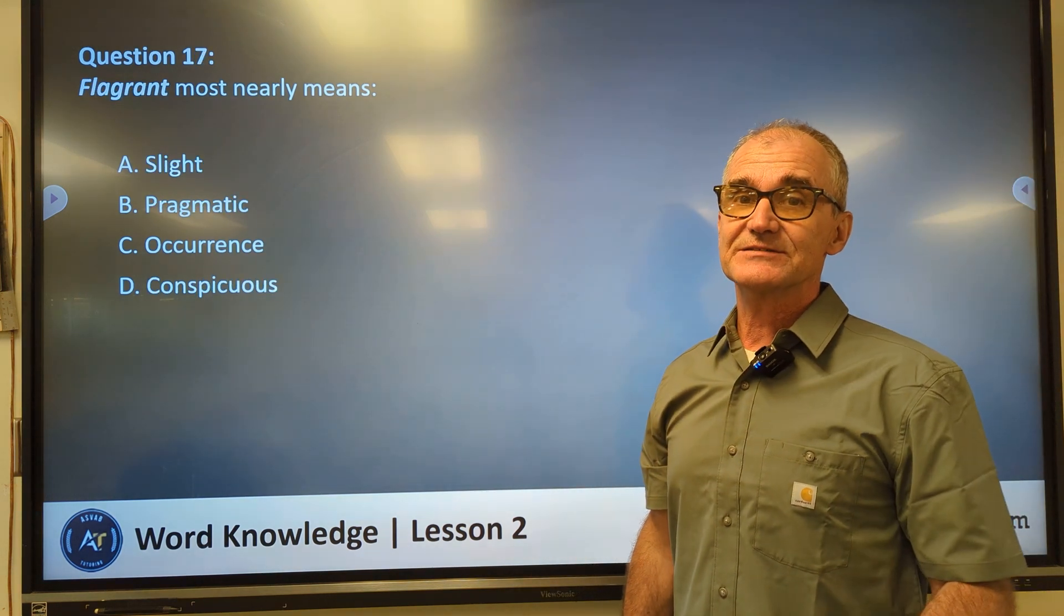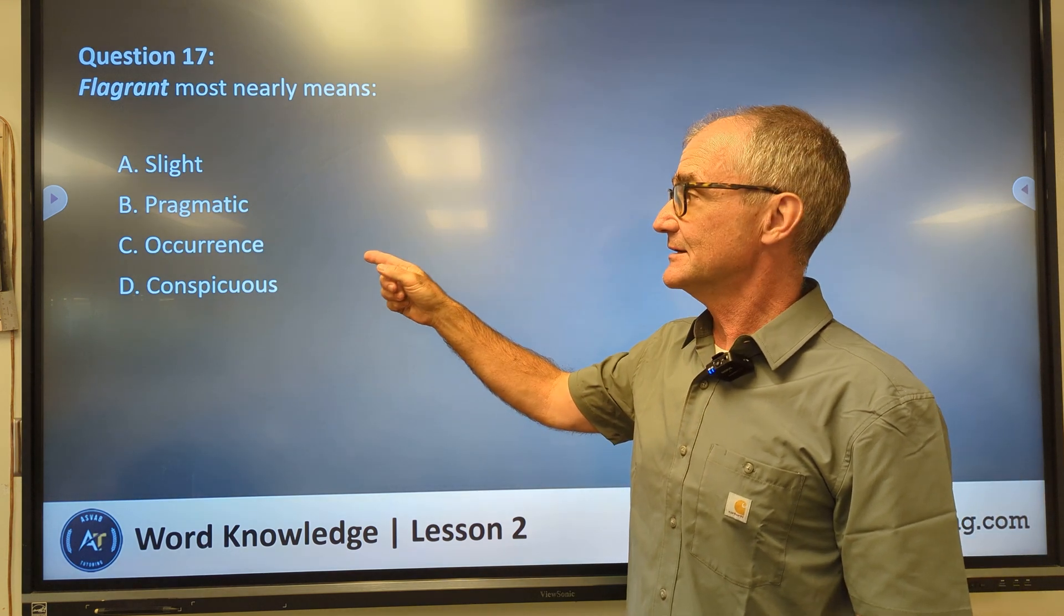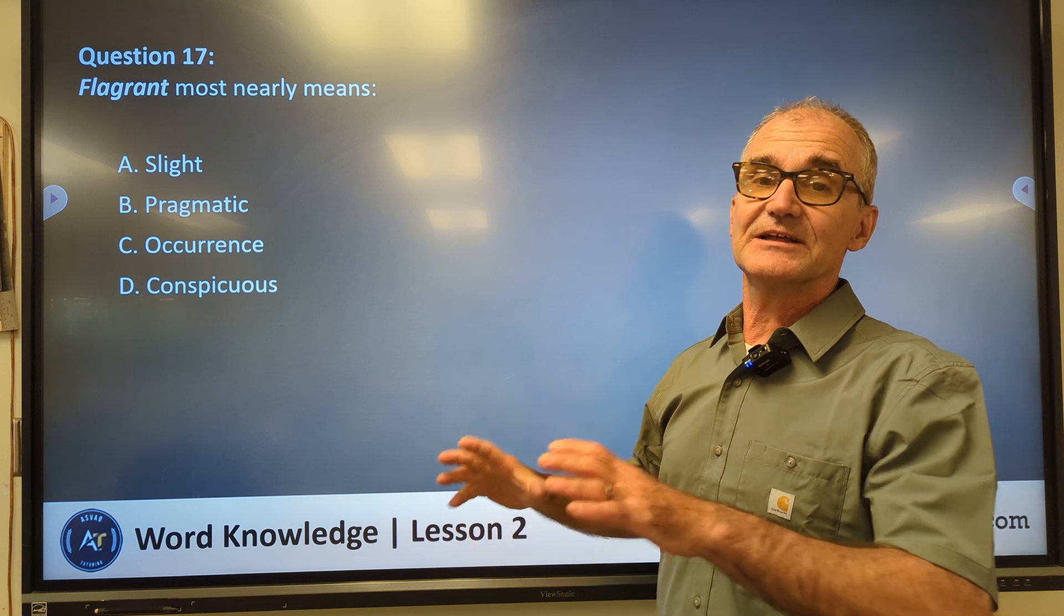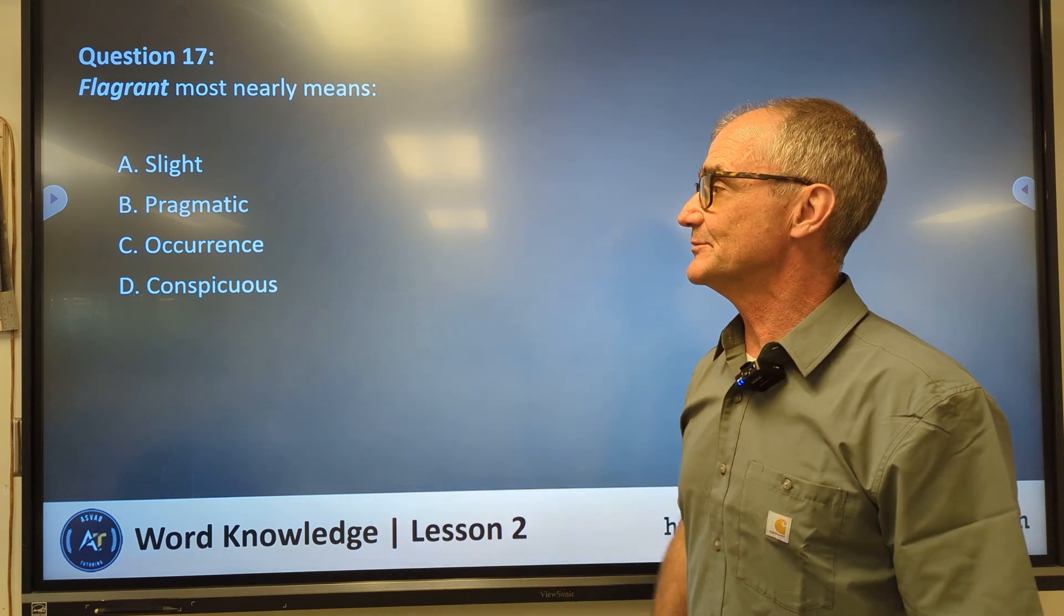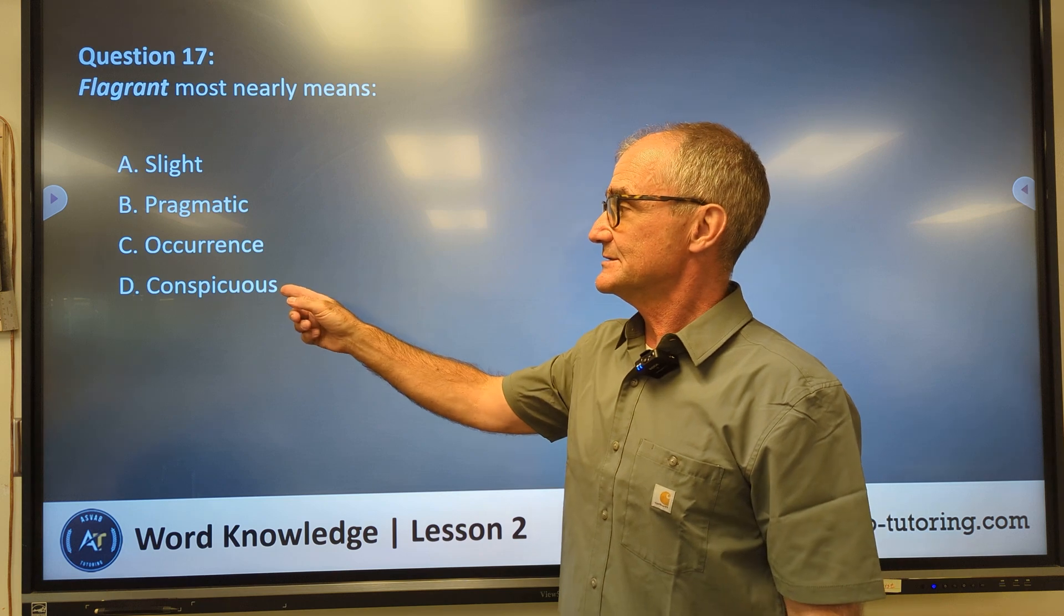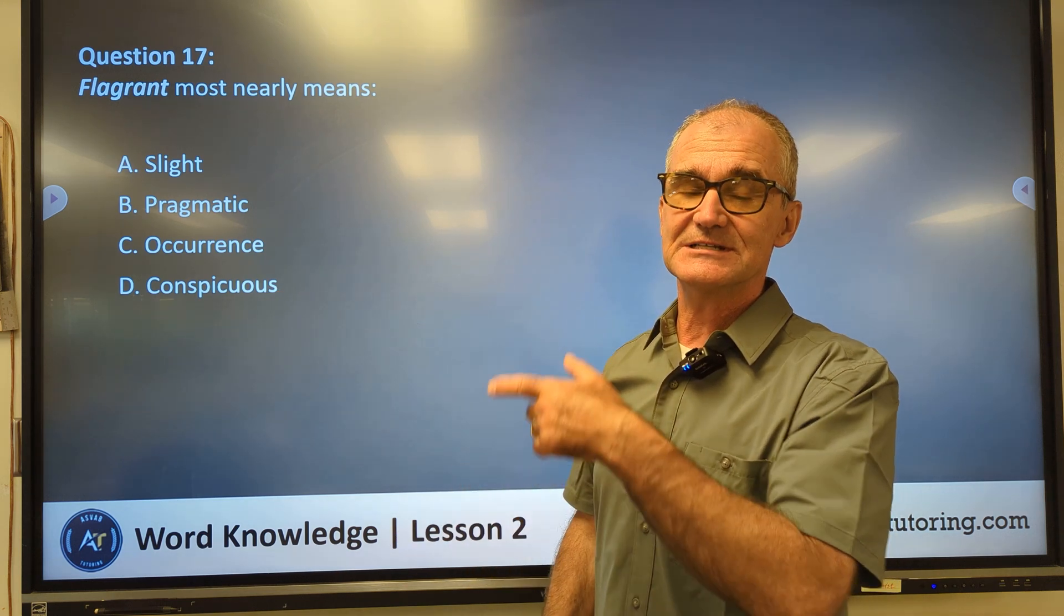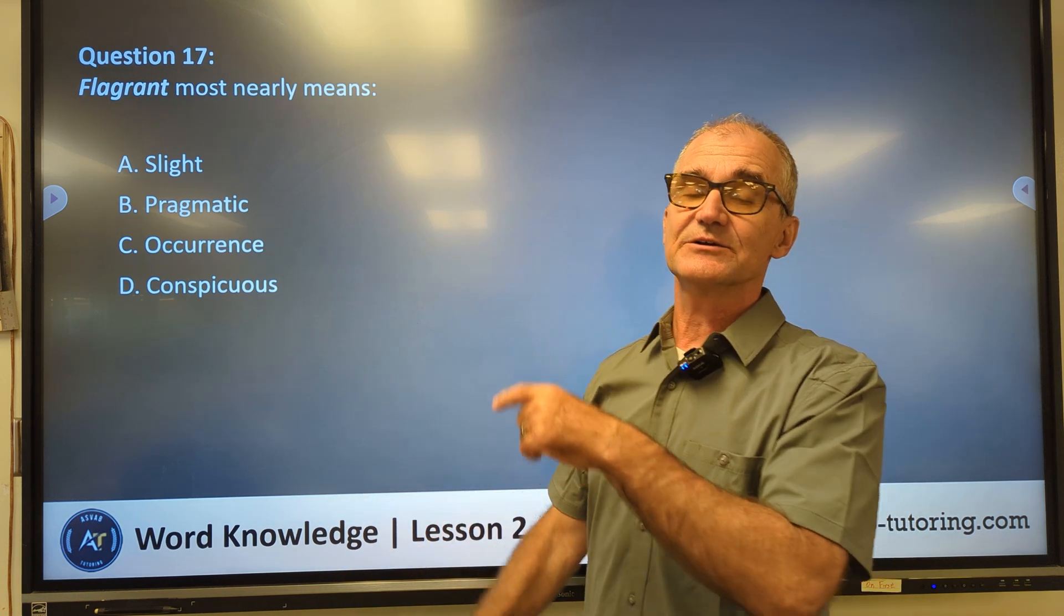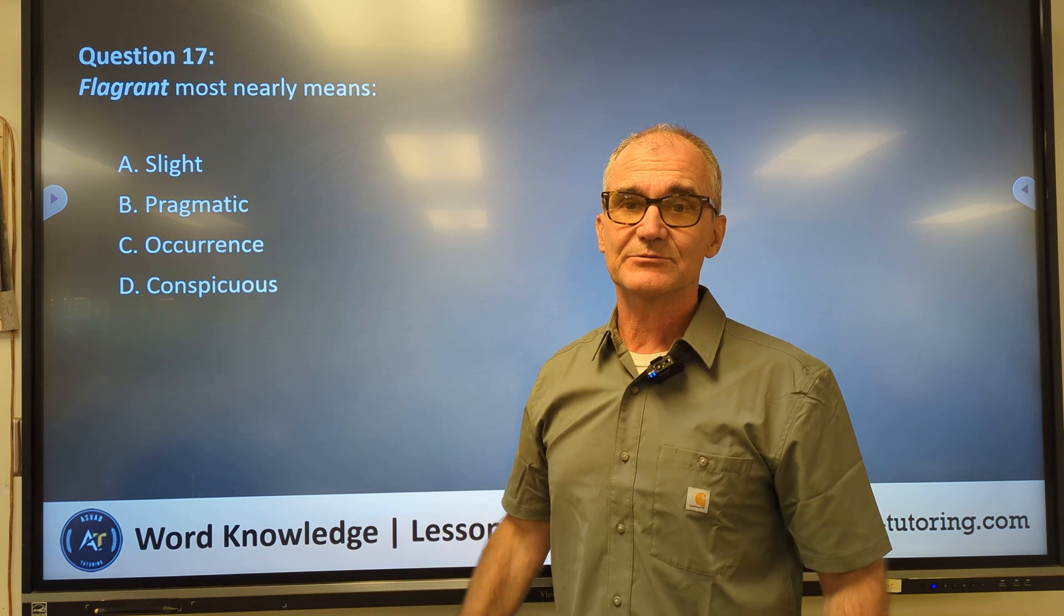Number seventeen, flagrant, most nearly means slight, pragmatic, occurrence, conspicuous. Flagrant, I think of a flagrant foul as a very obvious foul in football. Conspicuous is the opposite of inconspicuous. Inconspicuous, you see quite often, is really hidden away. So conspicuous means really obvious. Same thing as flagrant, really obvious.